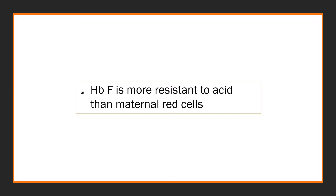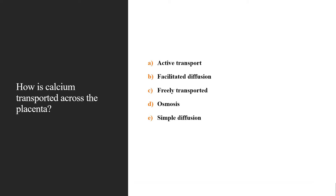The answer is haemoglobin F is more resistant to acid than maternal red cells. How is calcium transported across the placenta? Is it A. active transport? B. facilitated diffusion? C. freely transported? D. osmosis? Or E. simple diffusion?